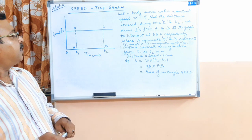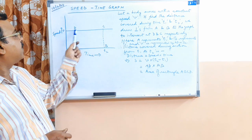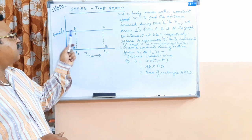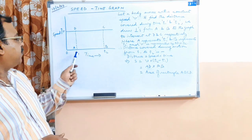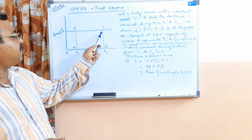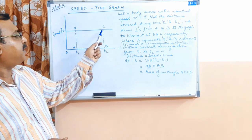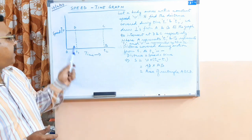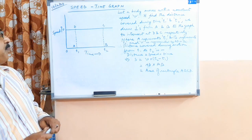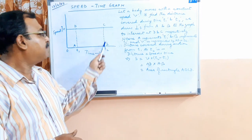Let a body move with a constant speed V. The speed V is constant. To find the distance covered during time t1 and t2, we draw perpendiculars from A and from B to the graph, intersecting at point D and at point C respectively. Here A represents t1 and B represents t2, and V is represented by AD, which is the same as BC.